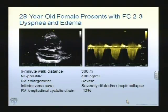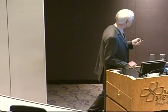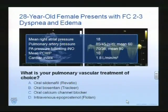This is a 28-year-old woman, functional class between two and three, with some symptoms, who had a six-minute walk of 300 meters, NT-proBNP of 400, severe right ventricular enlargement, dilated inferior vena cava clearly showing a well-filled ventricle, and right ventricular longitudinal systolic strain of minus 12%. For those not familiar with that measurement, anything less than minus 25% is typically abnormal. You can see some of her other indices. The question is: what would you use as a treatment for this patient? Would you choose an oral agent? Would you consider a calcium channel blocker? Would you consider intravenous prostanol or flolan?